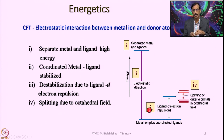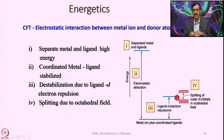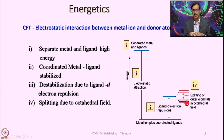Ligand–d electron repulsion increases the energy, and then depending upon the direction of approach of the ligands and the orbitals in which electrons are located, splitting takes place. This is a typical splitting pattern for an octahedral complex where T2g is triply degenerate and Eg is doubly degenerate. Eg consists of dz² and dx²-y² orbitals, while T2g consists of dxz, dyz, and dxy orbitals.